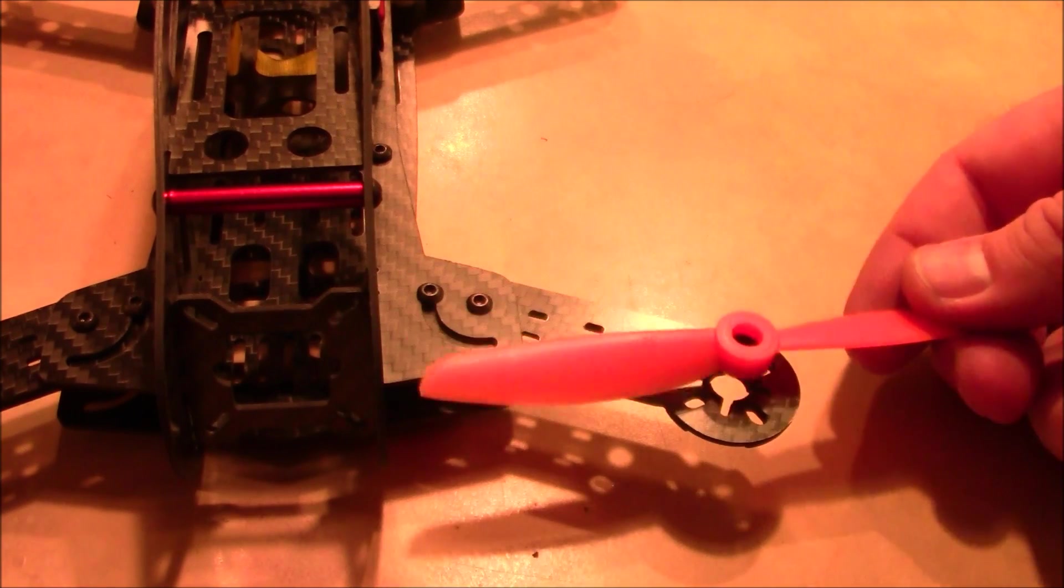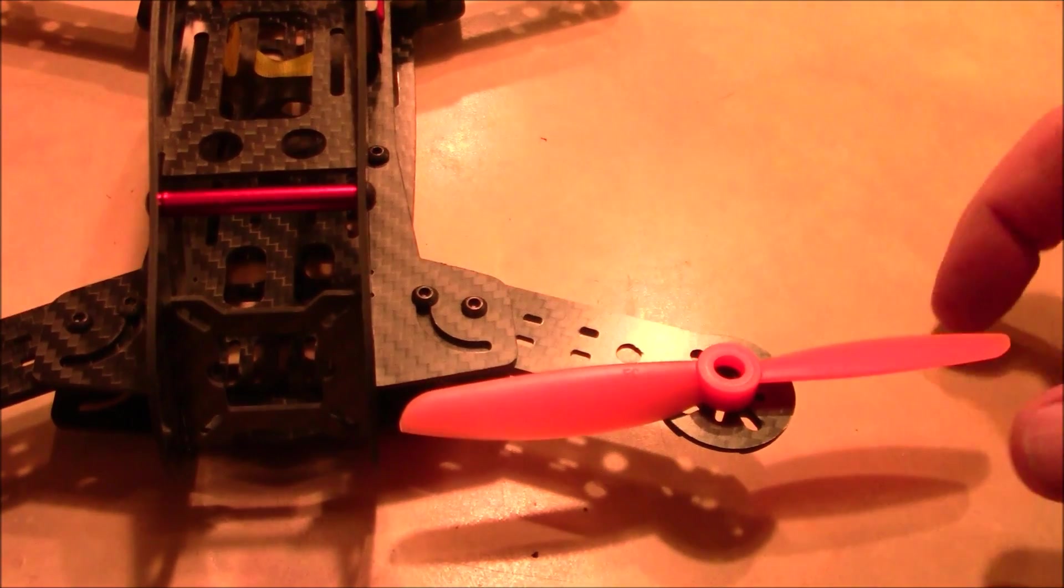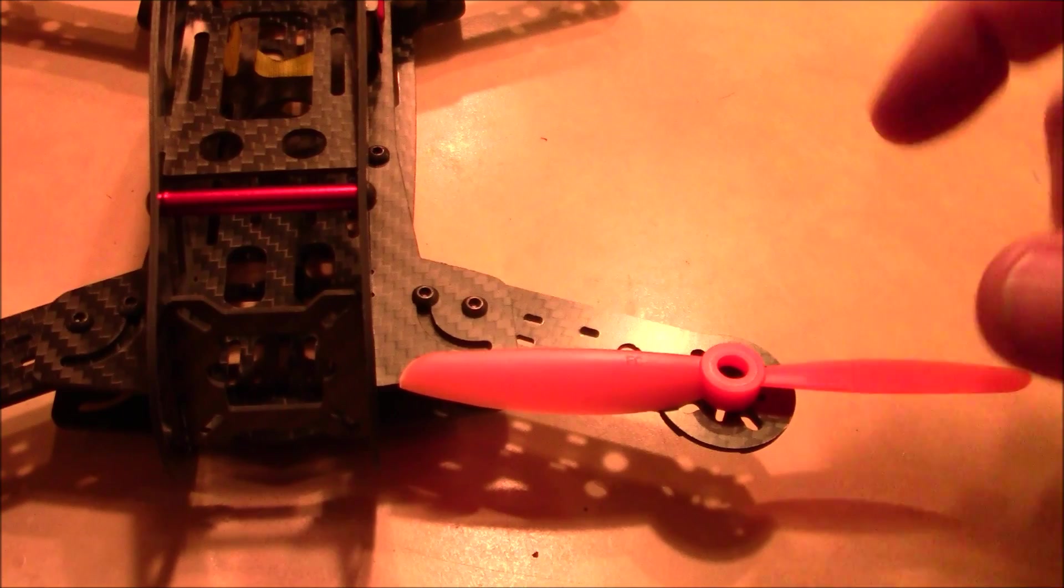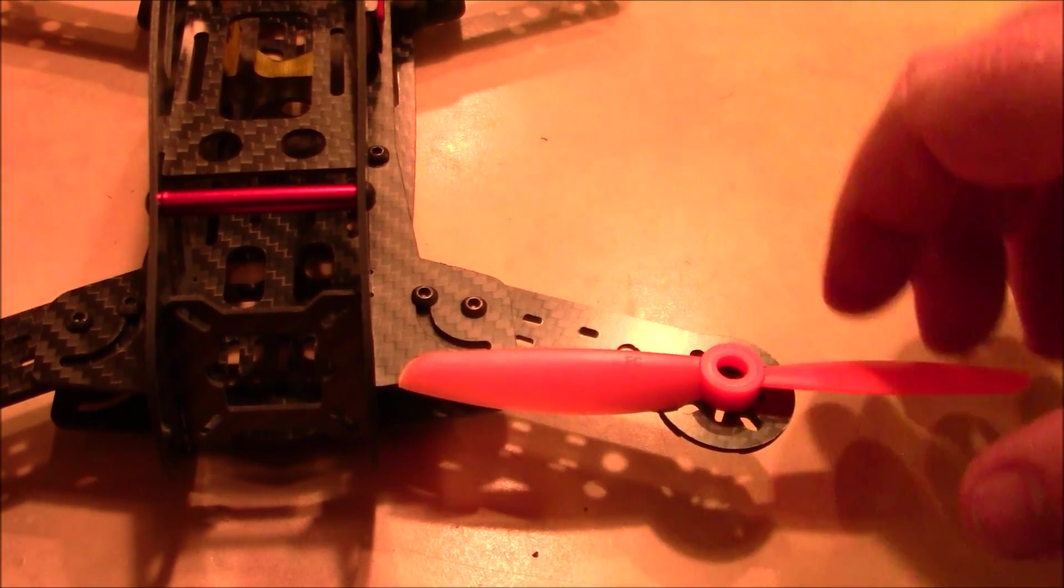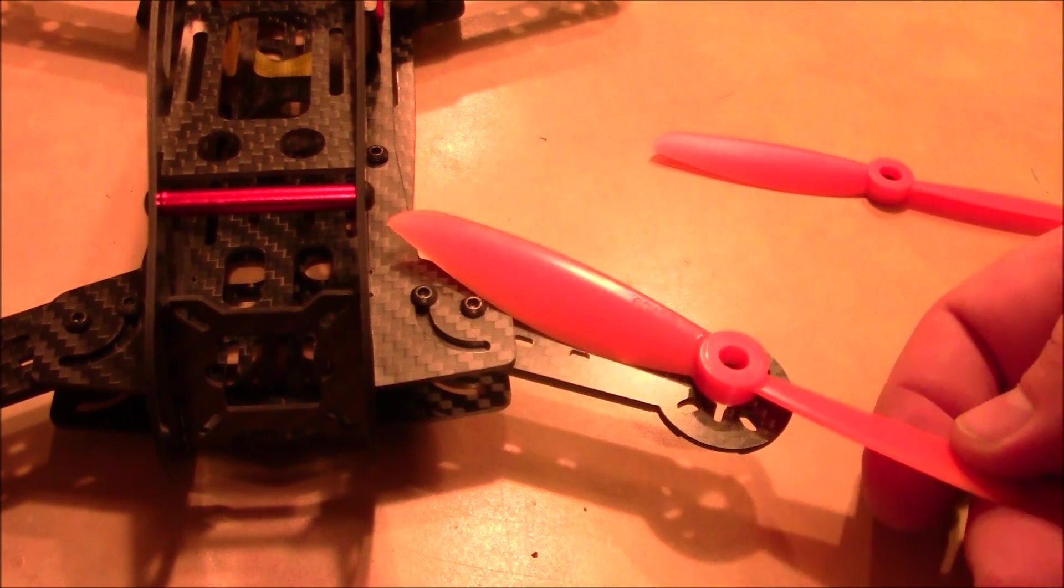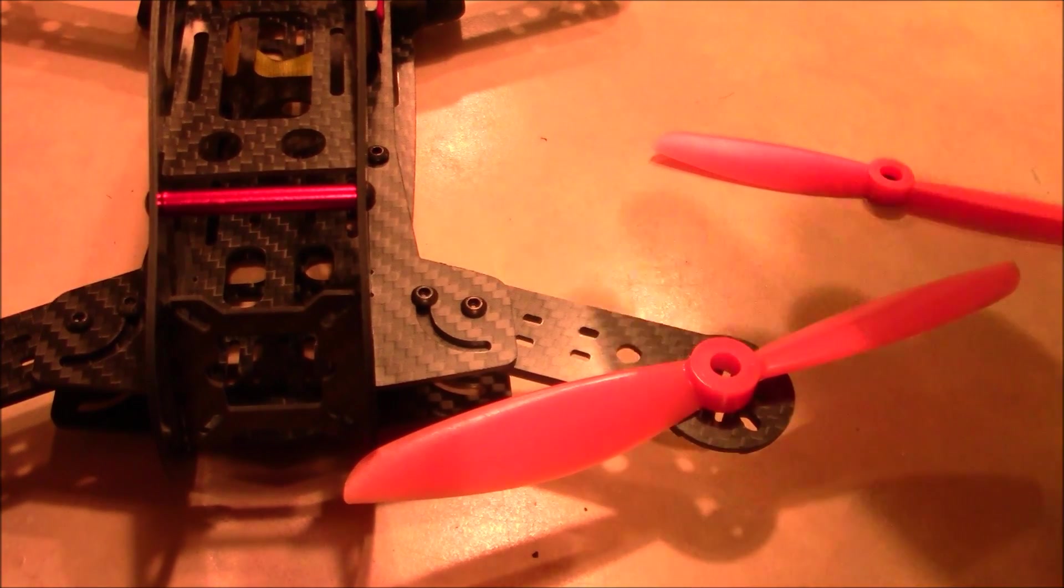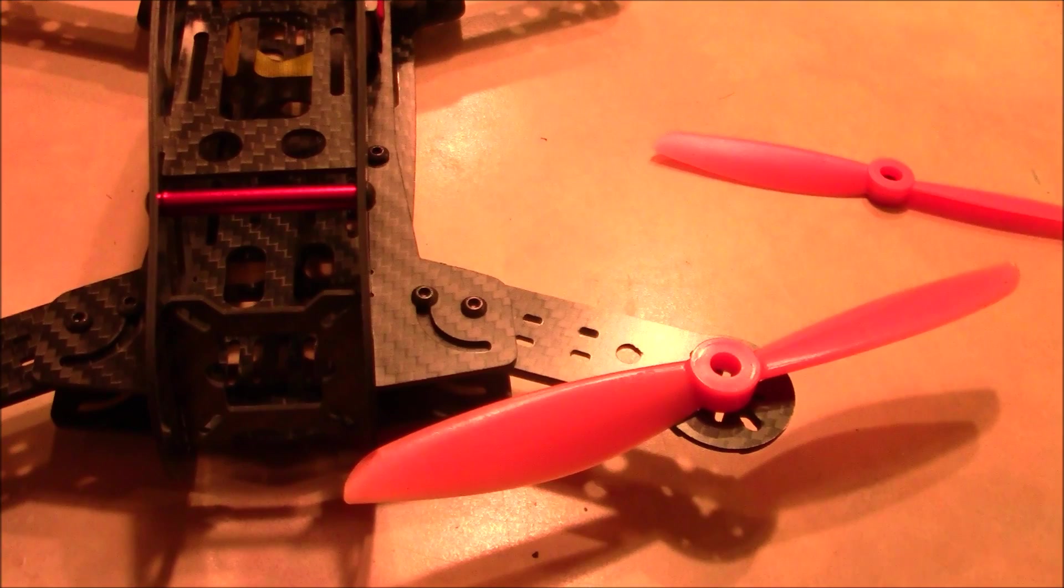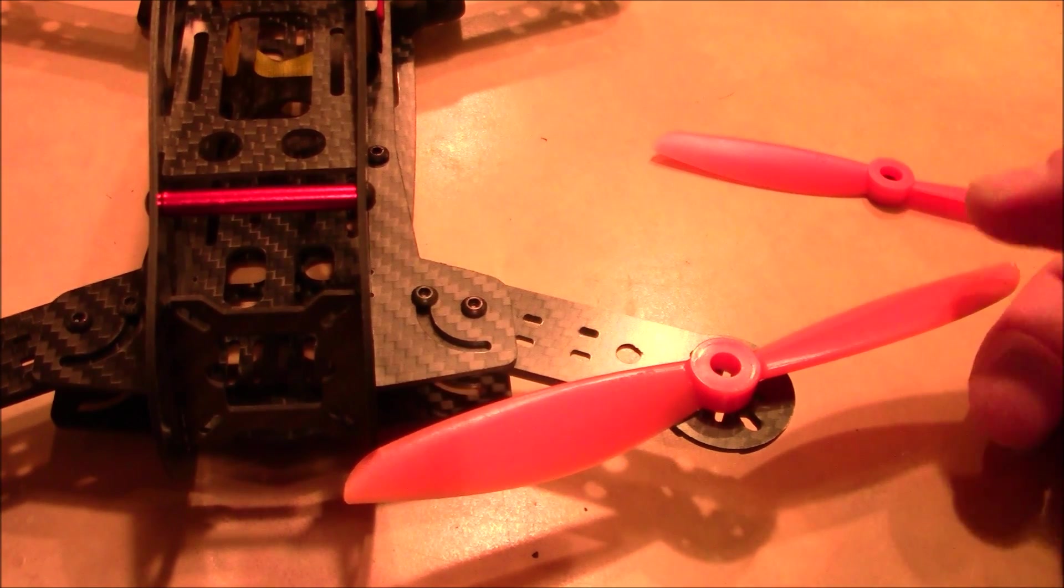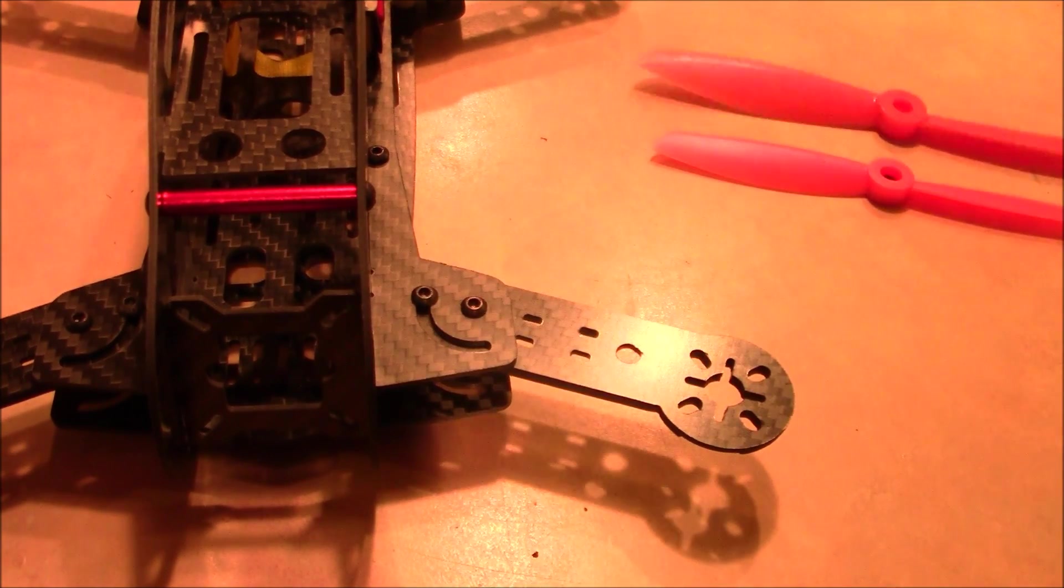So as far as the size of props, here's the 5 inch prop. I got it centered there and you can see it is just barely clearing the frame right here. Now with a 6 inch prop it has no chance. It's not going to spin 6 inch props. Maybe if you flipped it upside down or did some other weird stuff. But if you're buying this frame, don't expect to run 6 inch props.